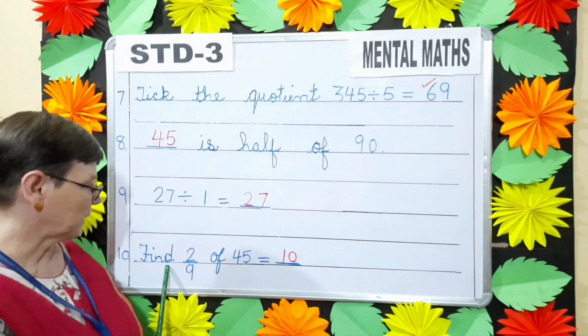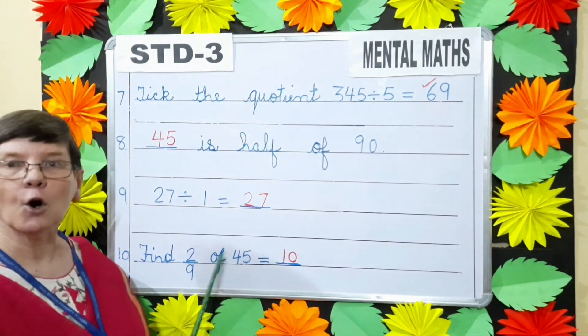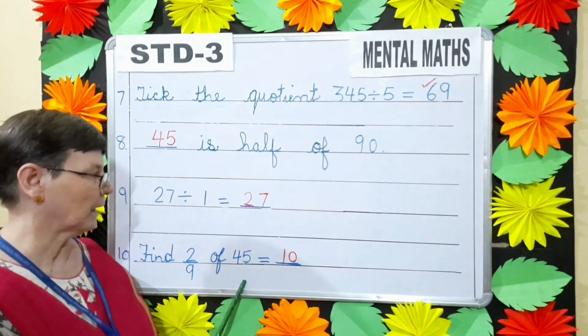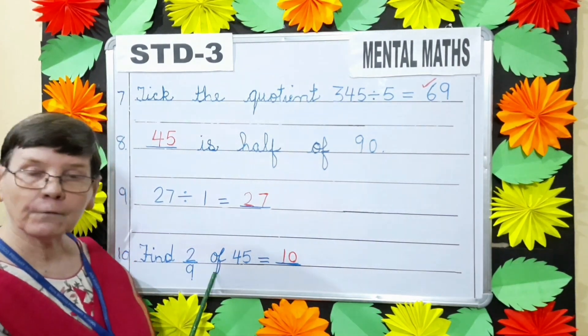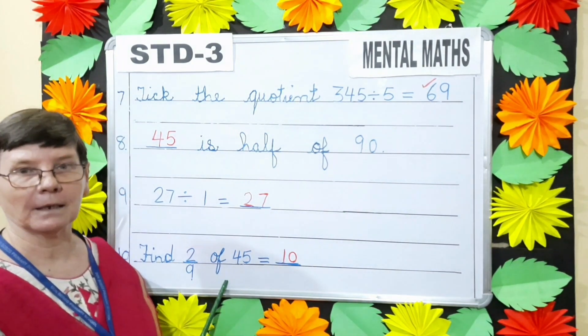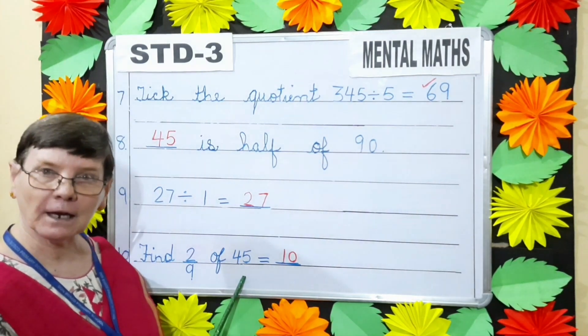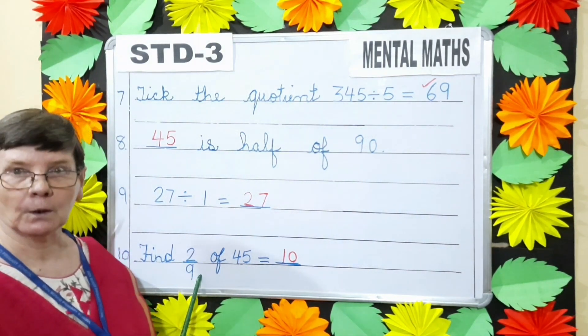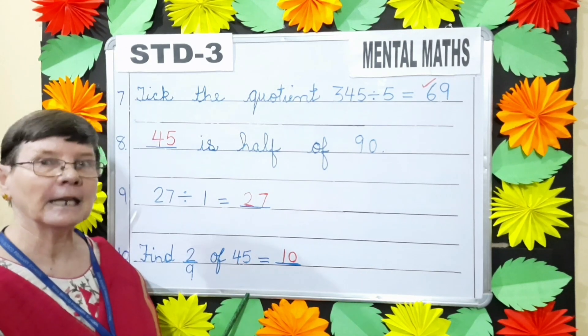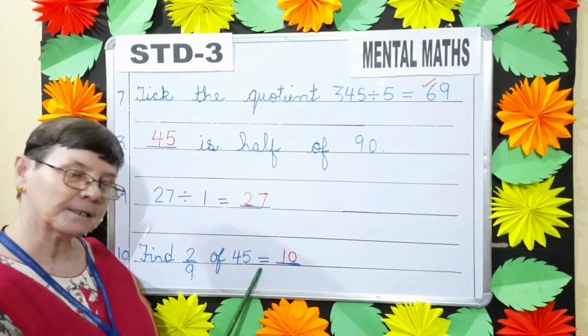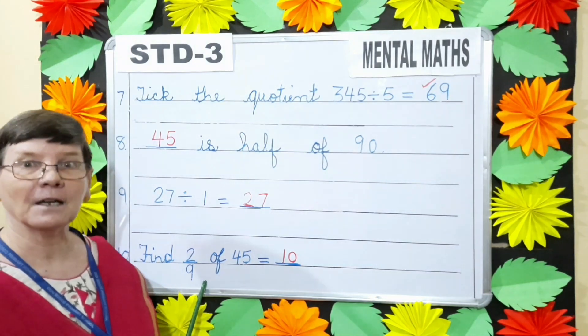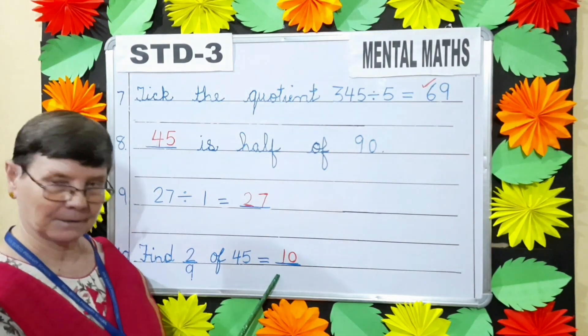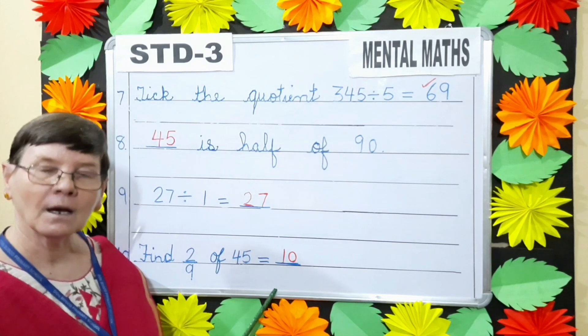Next, find 2 9th of 45 is equals to dash. Of means multiply. So we will multiply 45 into 2. What will you get? 90. 90 divided by 9. The answer will be 10. So 10 is your answer.